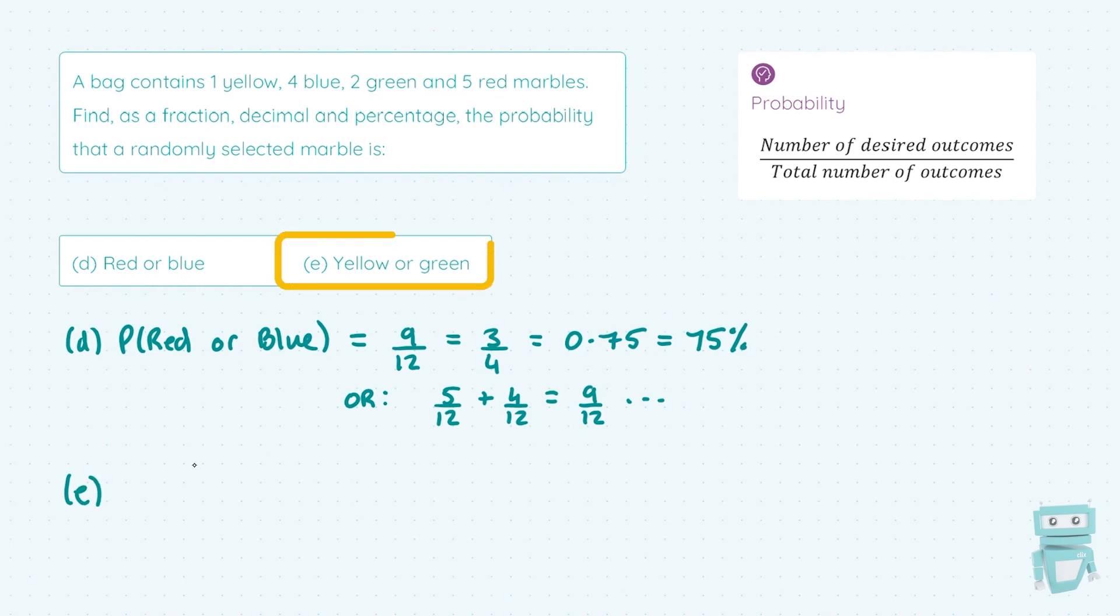Looking at part E to find the probability of choosing a yellow or a green marble. I look to see that there's 1 yellow and 2 green, meaning there's 3 possibilities here for yellow or green. That 3 goes out of 12. I simplify my fraction to 1 quarter. And then I'm changing it to a decimal, which I know is 0.25. And then I multiply either the fraction or the decimal by 100 to convert it into a percentage of 25%. Again, you could add separately the yellow, the 1 over 12, plus the green, which is 2 over 12, to get your 3 out of 12 and same answer as above.